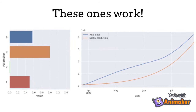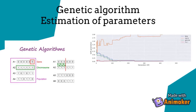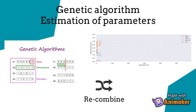We propose to estimate the best set of parameters based on a genetic algorithm. The genetic algorithm considers several sets of parameters, recombines them, and makes mutations to look for the parameters that better fit the current curve.